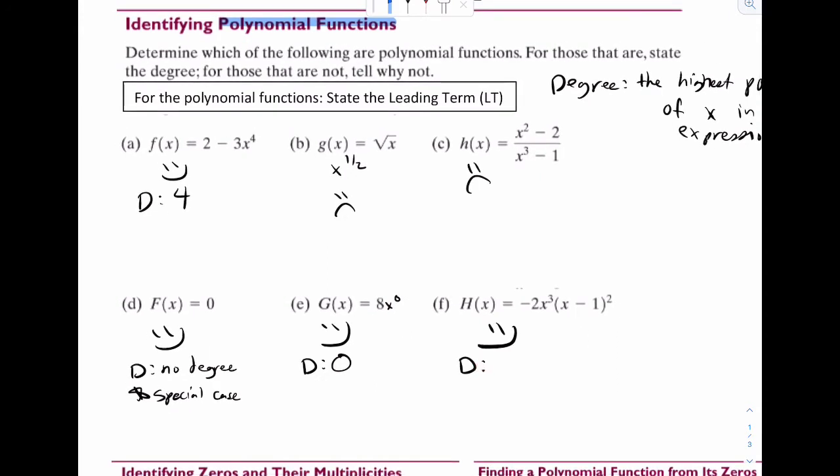And then for this one, a lot of people want to write three, but it's actually going to be five. And that's because if you're to multiply it out, this x cubed will get multiplied by an x squared. That would make x to the fifth. Okay, so there's degree.